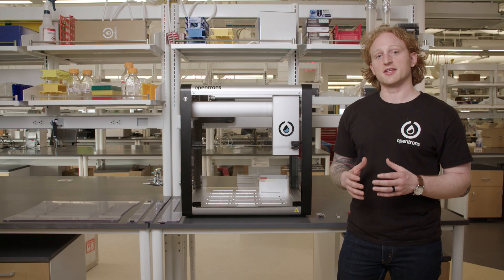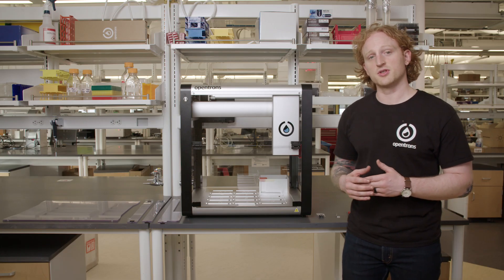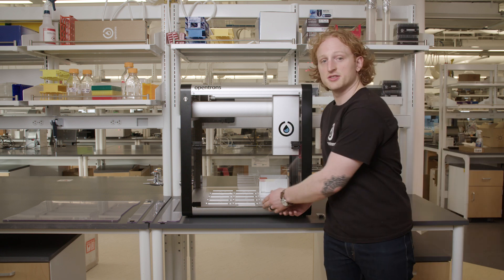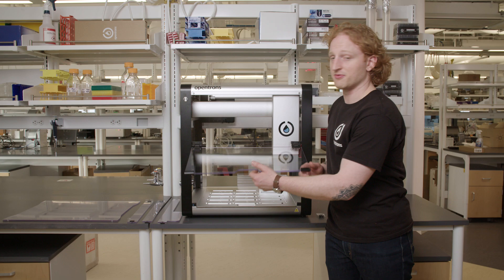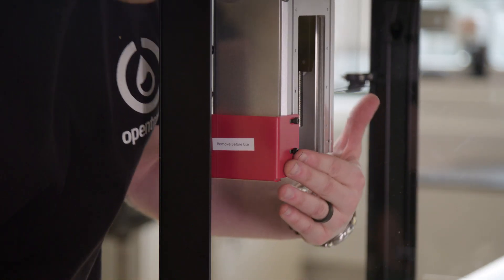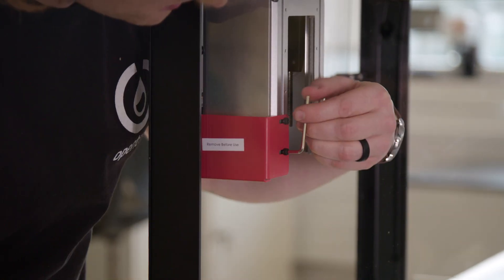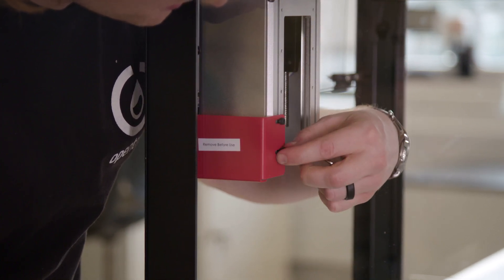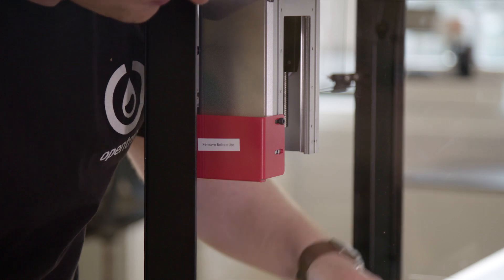The first bracket is held on by four screws, two of which are found behind the pipette carriage. These screws can be accessed via the front door. I will use the 3mm hex screw to remove these screws. Make sure to collect the nuts that fall out of the carriage.